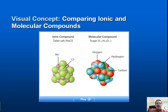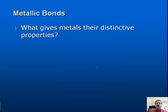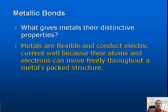Comparing ionic and covalent molecular compounds: ionic compounds form a very fixed structural shape — as between sodium and chlorine — which gives them a higher melting and boiling point. Whereas sugar doesn't have as fixed a structural attraction, so it boils and melts at a cooler temperature. Metallic bonds — what gives metals their distinctive properties? Metals are flexible and conduct electric current well because their atoms and electrons can move freely throughout a metal's packed structure.